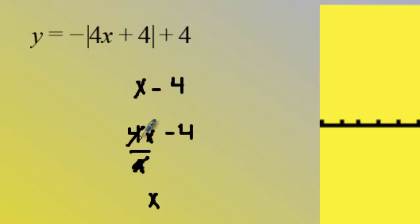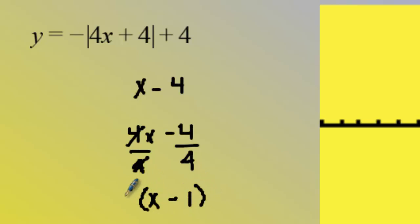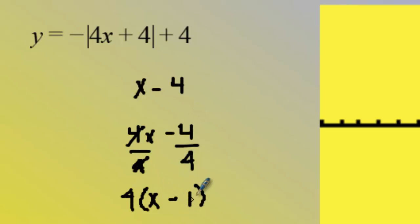However, because I divided this term by four I must also divide this term by four, leaving a one. I now put that four on the outside. This four times x, if I distribute back, gives me the four x I began with, and four times negative one gives me the negative four I began with. But now I can see what the horizontal translation is — it's actually a movement of one to the right, not a movement of four.